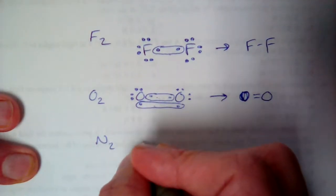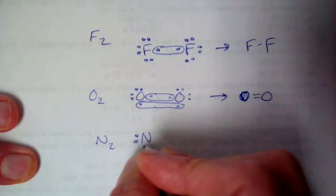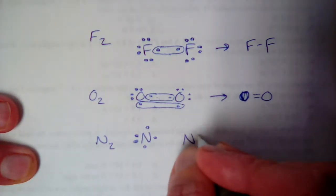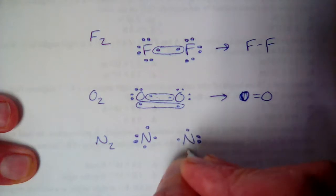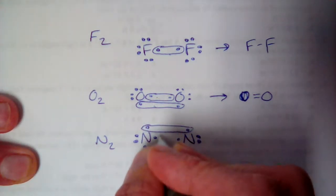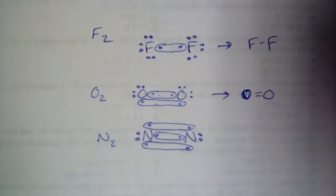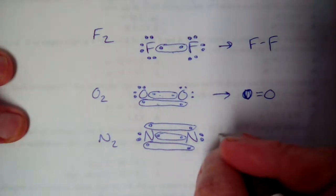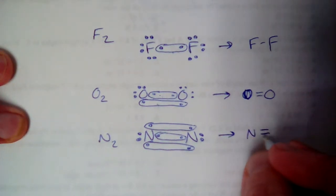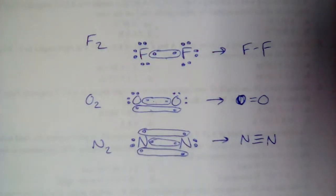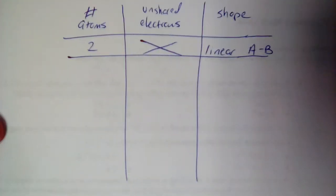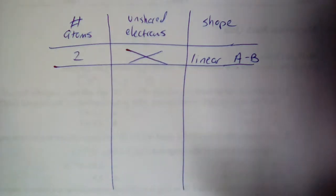Finally, N2. Nitrogen has five valence electrons — one pair and three singles. When I pair up the singles, I get three pairs to share between them — three connections, three covalent bonds — that's a triple bond, shown with three dashes. So all two-atom molecules are linear; it's just a question of whether they're single bonded, double bonded, or triple bonded.